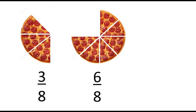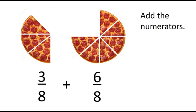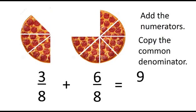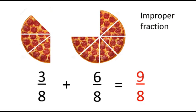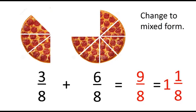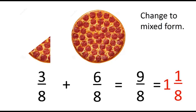Let us have another example. We have 3 eighths and 6 eighths. Let's add them using the method we used earlier. First, let's add the numerators: 3 plus 6 is 9. Then, copy the common denominator. The common denominator is 8, so 8 is our denominator. 9 eighths is an improper fraction, meaning we need to rename our answer to mixed form or mixed fraction. So, our final answer will be 1 and 1 eighths.